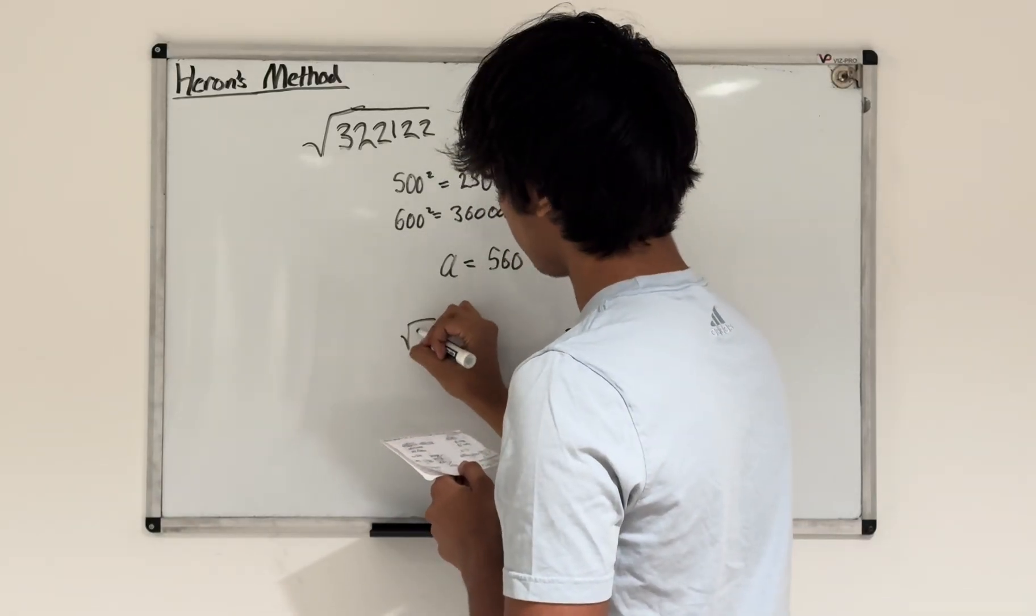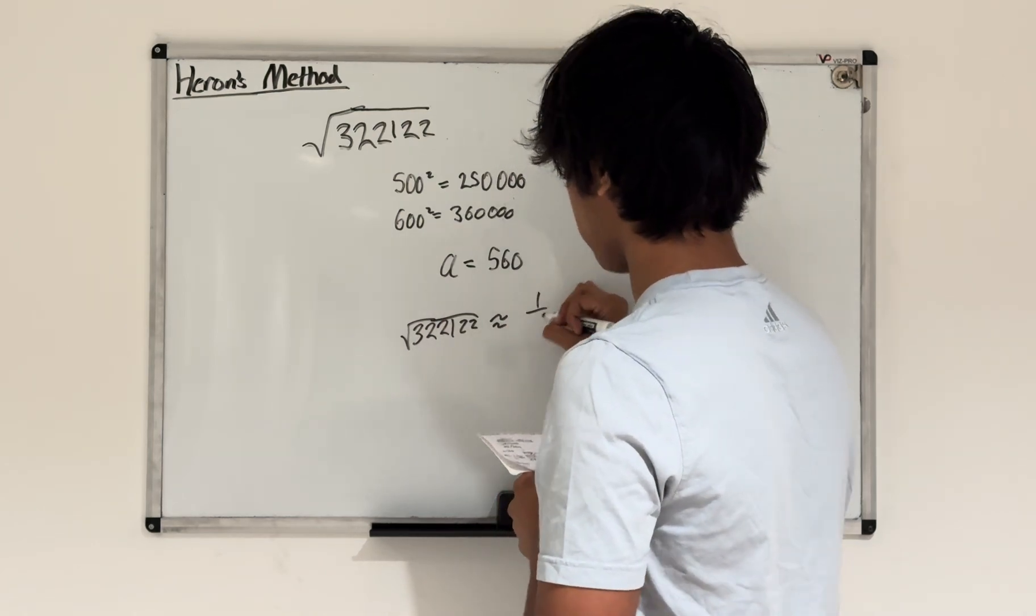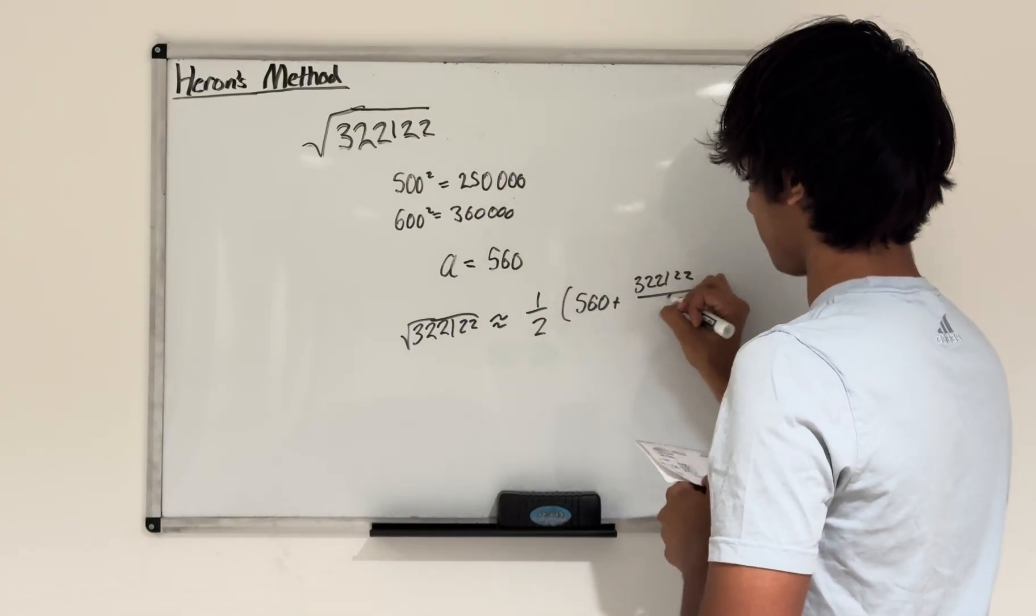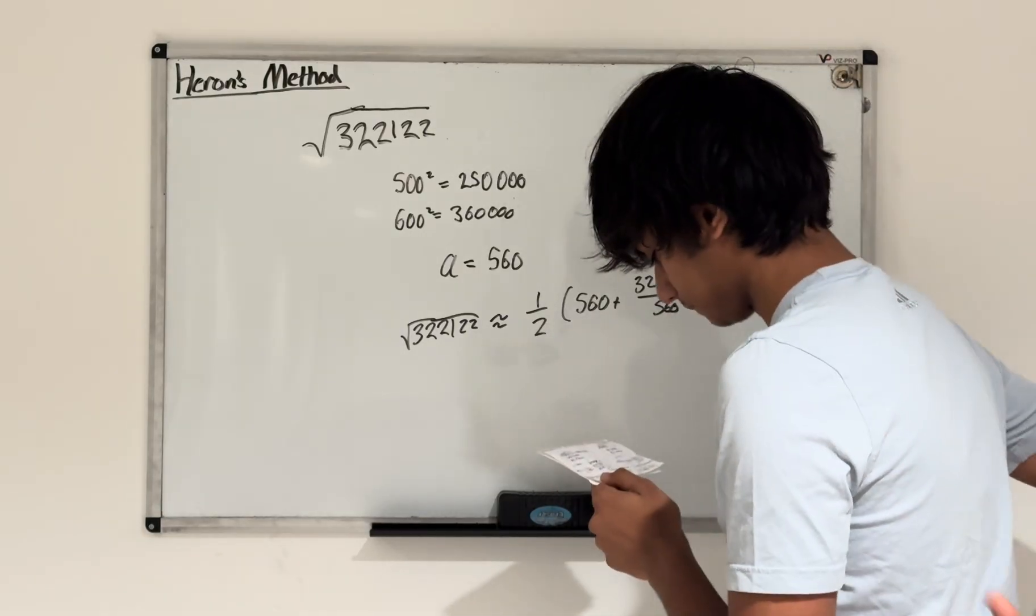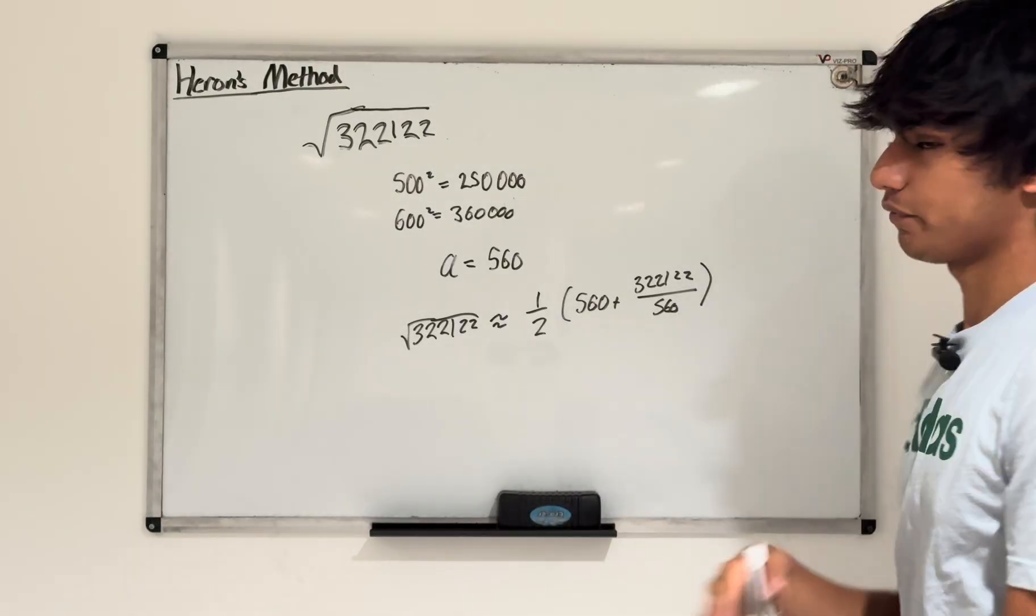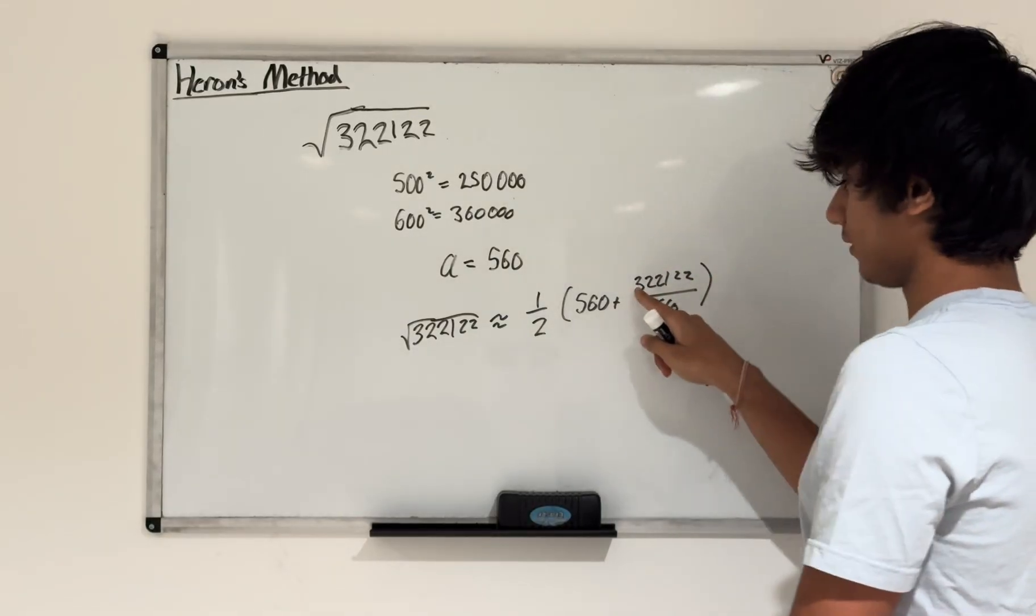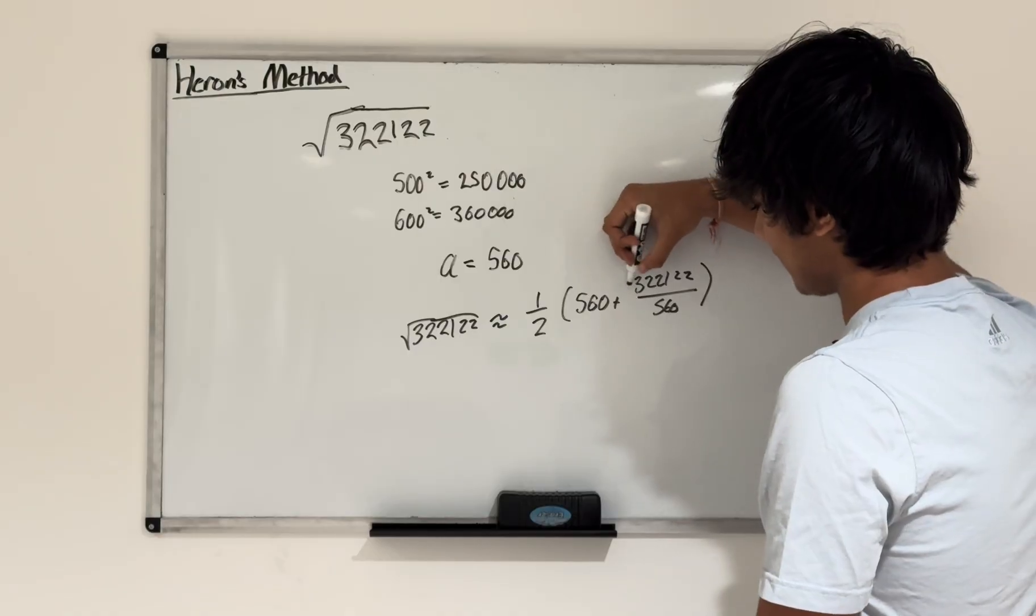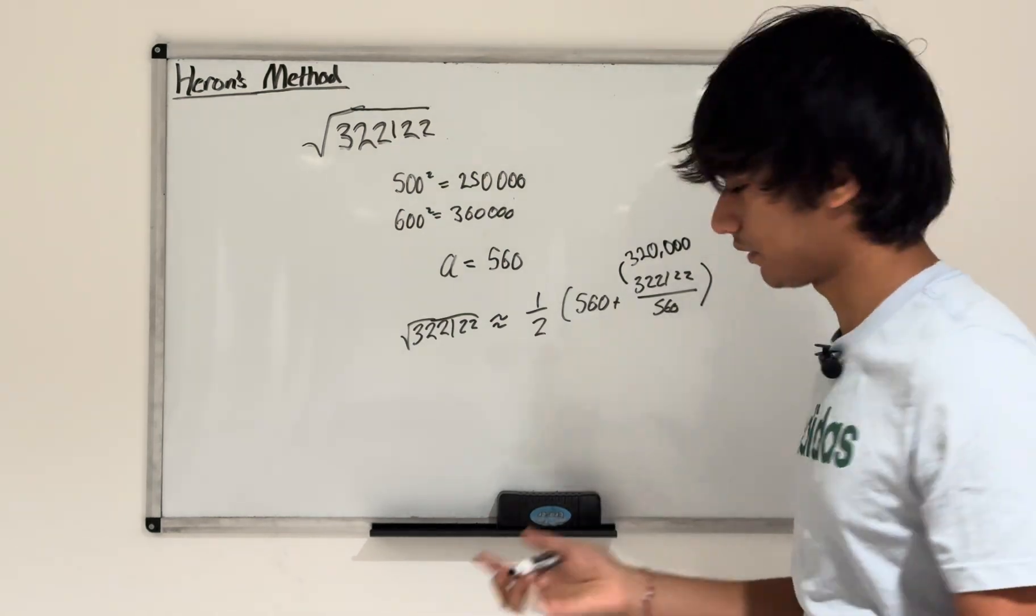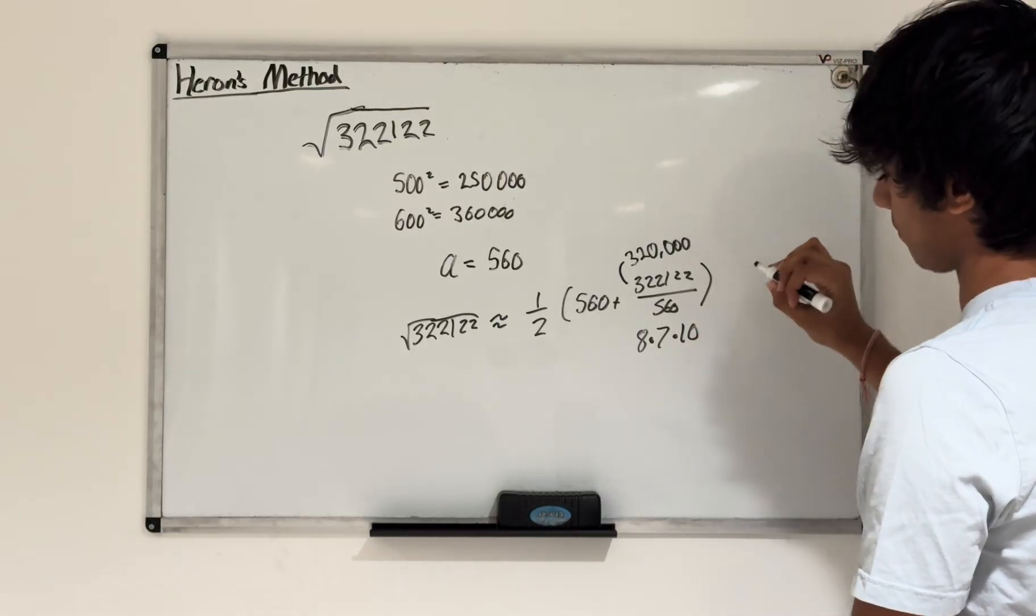The square root of 322,122 I approximate to be 1 half times 560 plus that number 322,122 divided by 560. 560 is a hard thing to do in your head, but if you have a piece of paper, it isn't too bad if you want to try this out. An easy way we can do this really quickly is we can say 322,122, that's basically 320,000, right? Not exactly, but close enough. Then 560, we can break that down into 8 times 7 times 10.